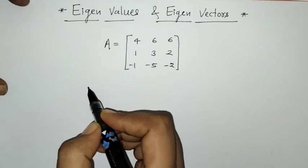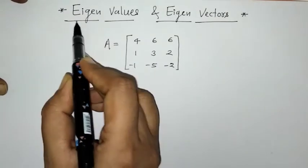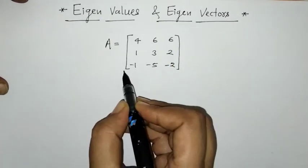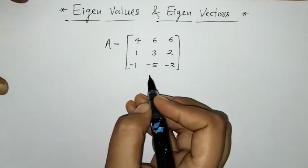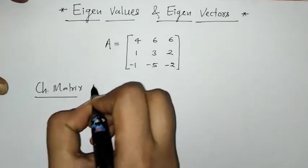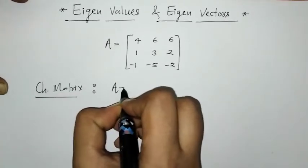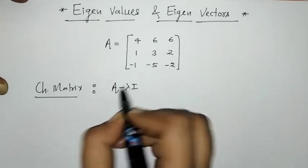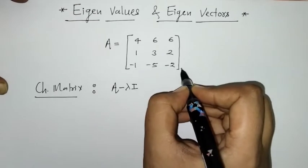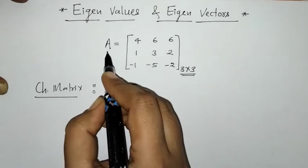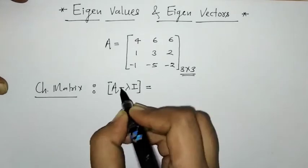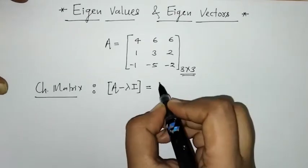Hello everyone, welcome to Unlock Maths. Today we have to find eigenvalues and eigenvectors for a given matrix. First, we will find the characteristic matrix, which is given by A minus λI, where A is the given matrix, λ is a scalar, and I is the identity matrix of the same order as A.